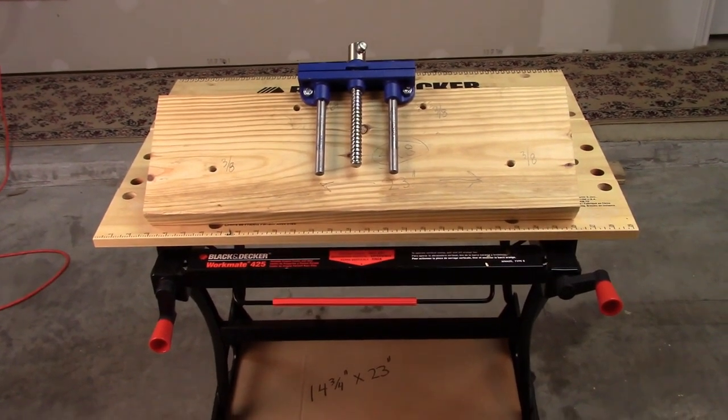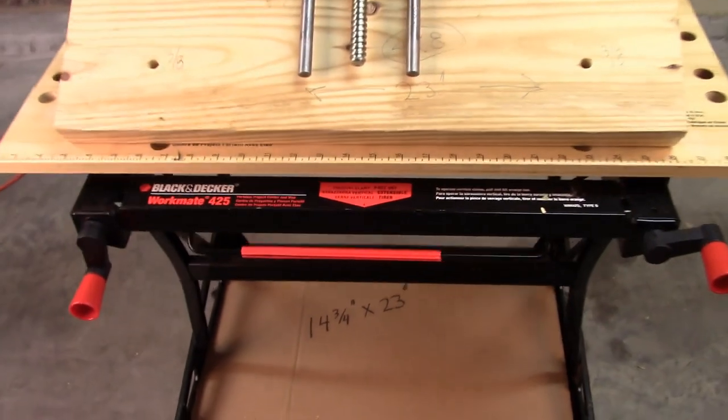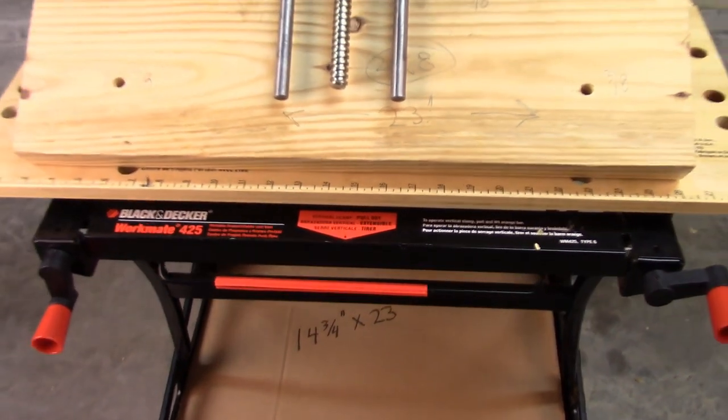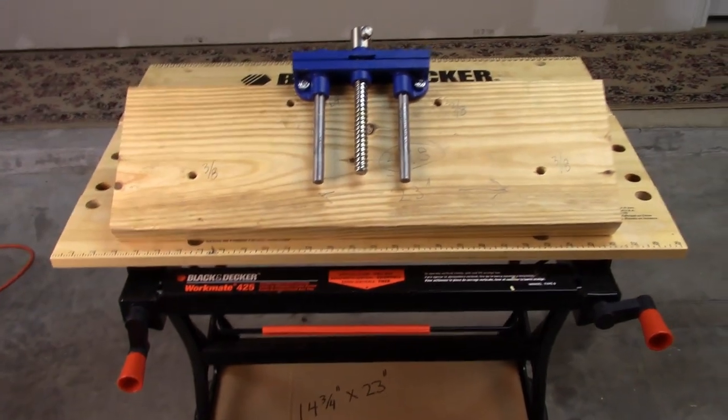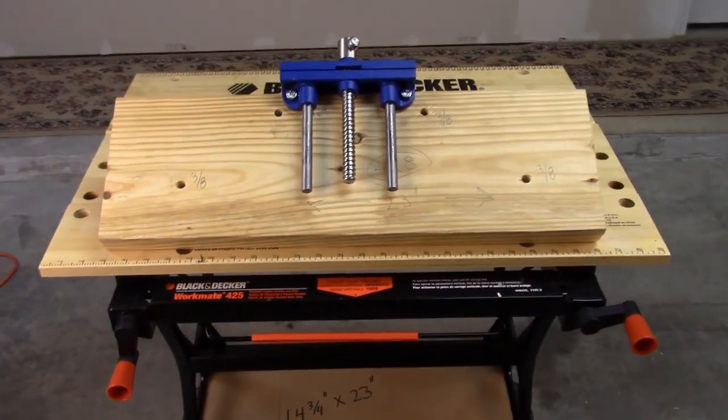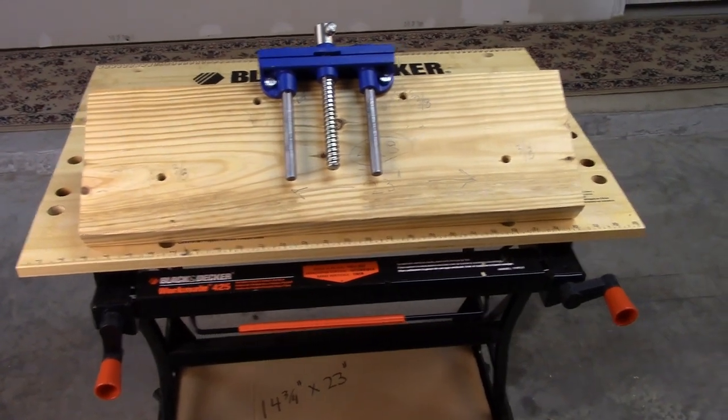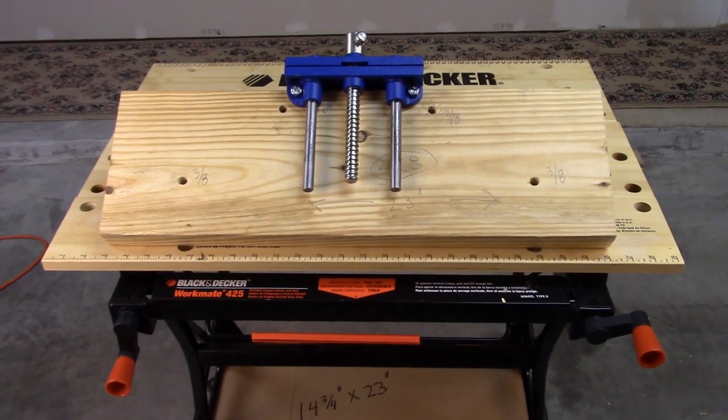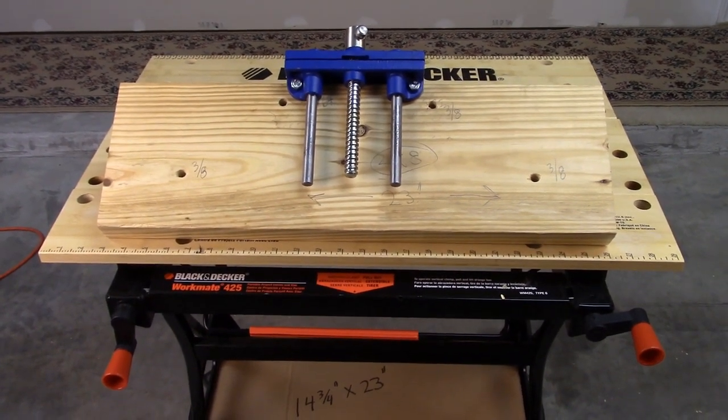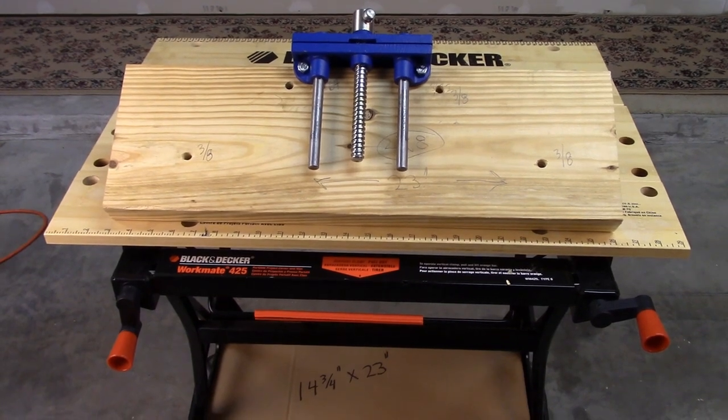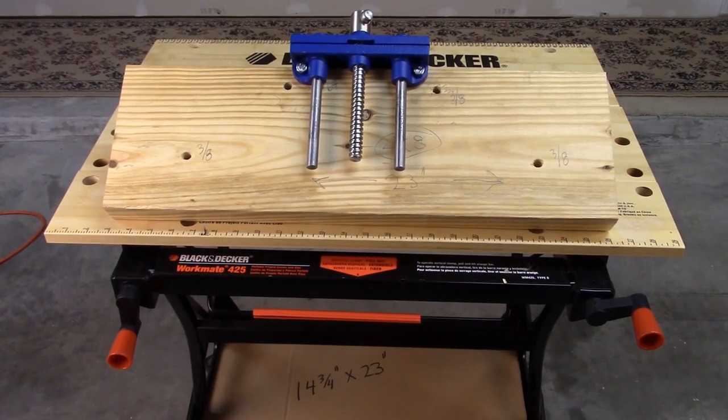Attempting to attach this vise to the front side of the Workmate 425 presents the same problem as it does on the left or the right hand side. In this case there's zero clearance so the only way to do that is to take a panel like this and attach it somehow to the top. But when you do that then it's going to get in the way of the crank handle so it really impedes the ability to use the clamping capabilities and the other working surface of your Workmate 425.